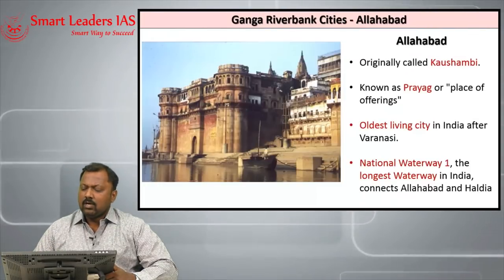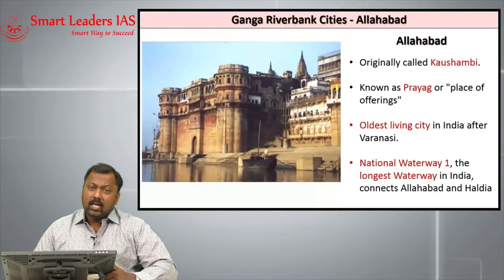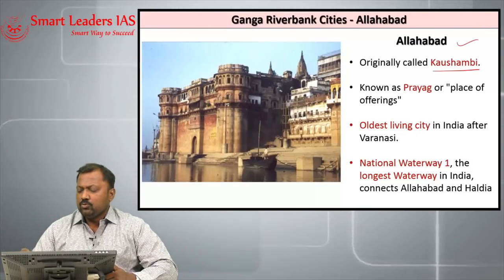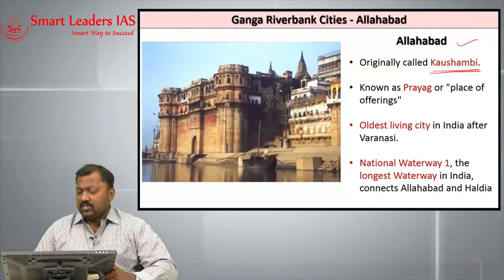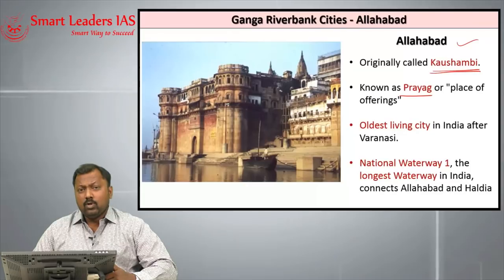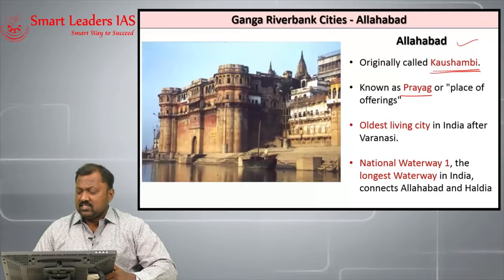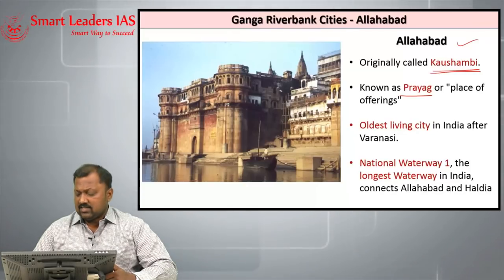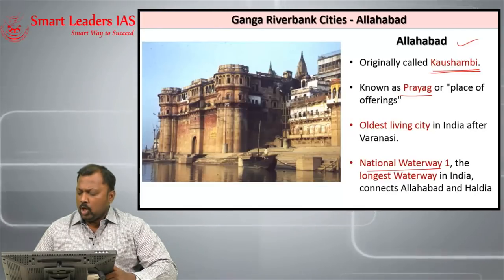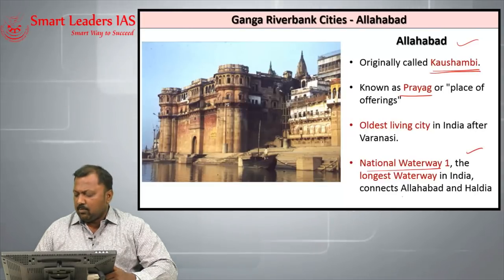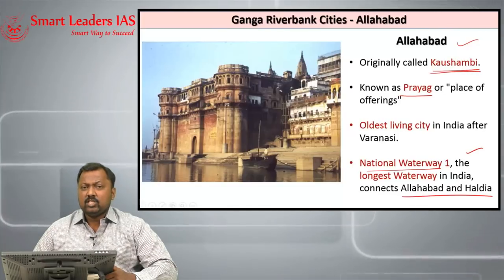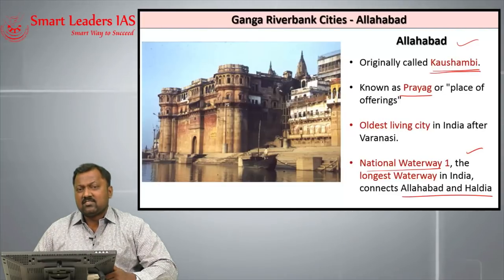Next we travel to Allahabad, referred to in ancient India as Kaushambi, and also as Prayag or the place of offering. It is one of the oldest living cities in India after Varanasi. It is in Allahabad that National Waterway No. 1 originates, connecting Allahabad and Haldia.